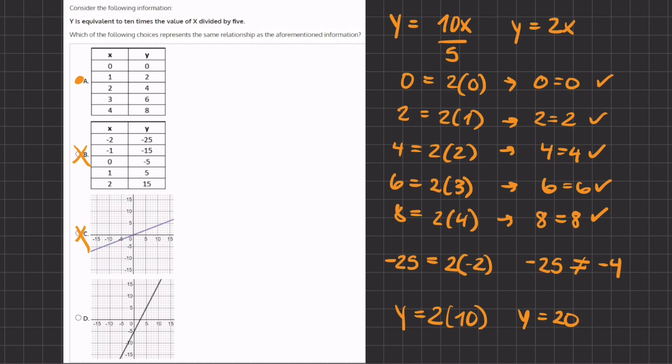Now D, we can automatically tell that it is not the correct answer because the y-intercept does not go through the origin of the axis. Therefore, D can also be eliminated, and A will be our final answer.